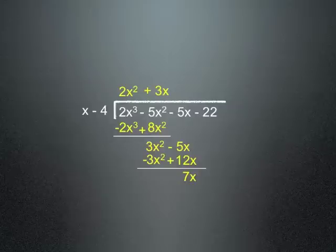Now we take that negative 22 and we're gonna slide it right down. There it is. What times x is equal to 7x which is that right there. And of course that is 7.